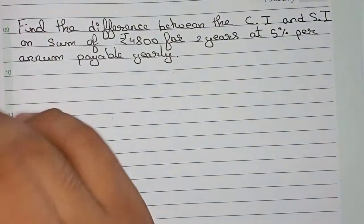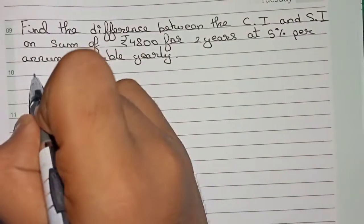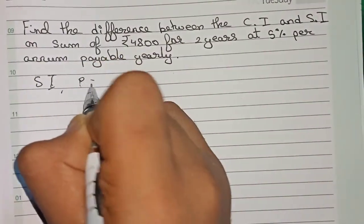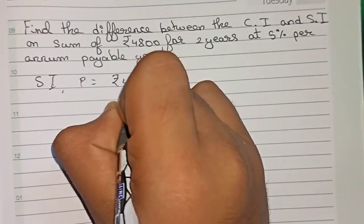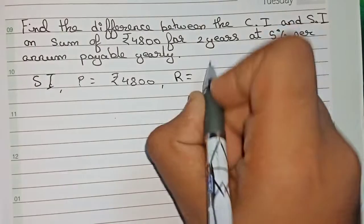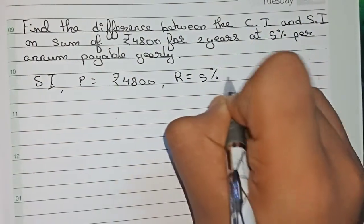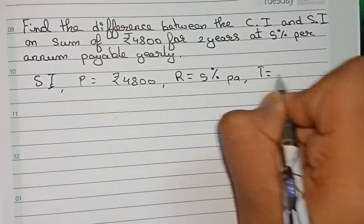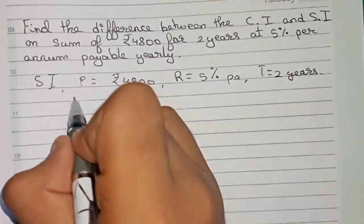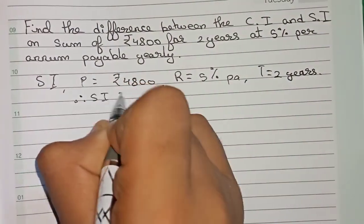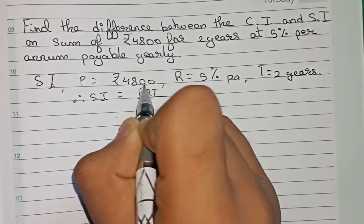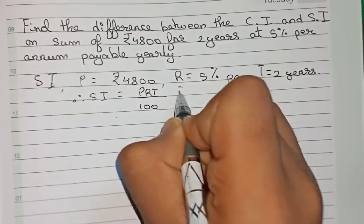First we'll find out the simple interest. For SI, the principal is equal to four thousand eight hundred rupees, rate of interest is five percent per annum, and time is equal to two years. Therefore, SI equals the formula PRT by hundred — principal into rate into time by hundred.